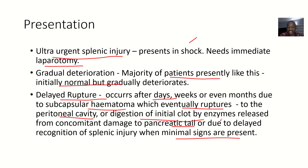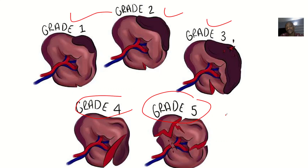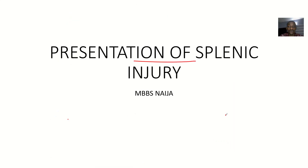The spleen has blood in it but it didn't rupture on time because it held down the bleeding — but eventually it ruptured, perhaps because there was digestion by enzymes. When it ruptures, the blood bursts out into the peritoneal cavity. This type of patient will present with abdominal pain, abdominal distension, tenderness, and muscle guarding.